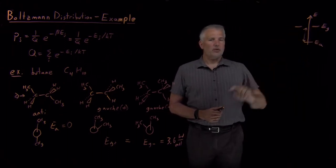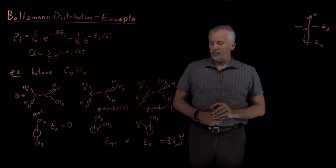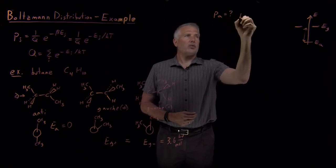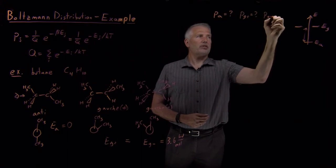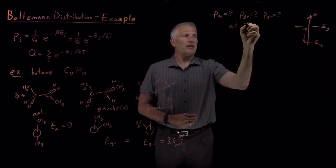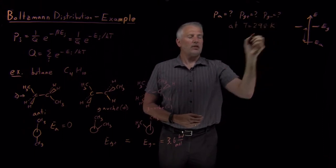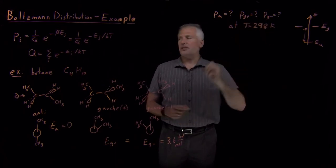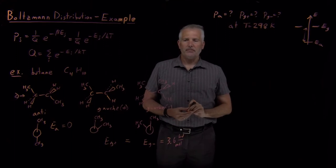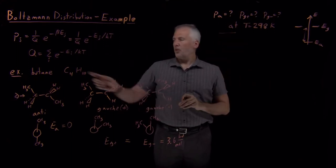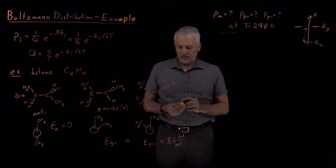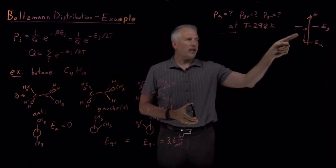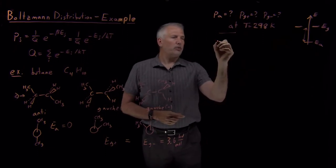So I have three states in total. My question is: what is the probability that I'm in the anti state, and what are the probabilities that I'm in the Gauche plus and minus states at room temperature? If I know the temperature and the energies, I can calculate the probabilities using the Boltzmann distribution. The first step is to calculate Q — the sum of the Boltzmann factors for each of my three states: anti, Gauche plus, and Gauche minus.